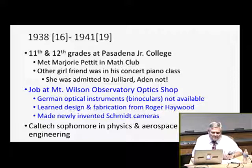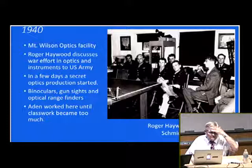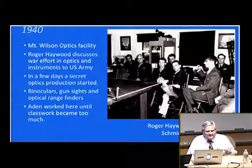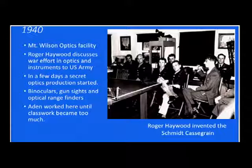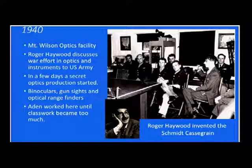He learned design and fabrication from Roger Haywood, and at the time he made Schmidt strip cameras. He interviewed at Caltech as a sophomore in physics and aerospace engineering. Roger Haywood discussed the war effort in optics — he invented the Schmidt-Cassegrain Telescope — and a few days after this picture was taken, optics production was started. Binoculars, gun sights, and optical range finders were made. He worked here until the work at Caltech became too difficult for him to continue. And that's Roger Haywood.